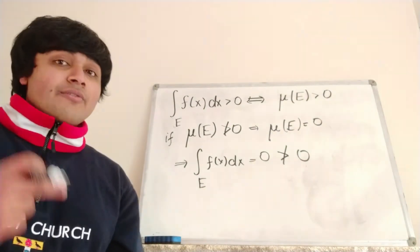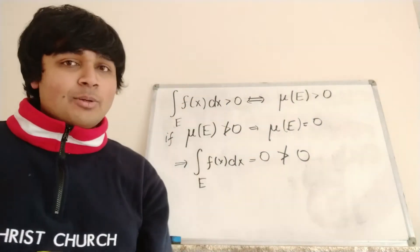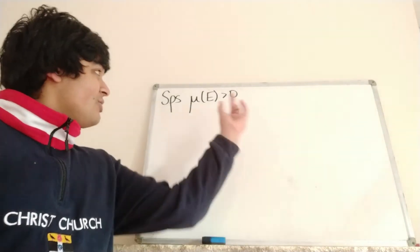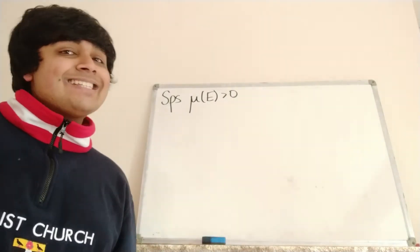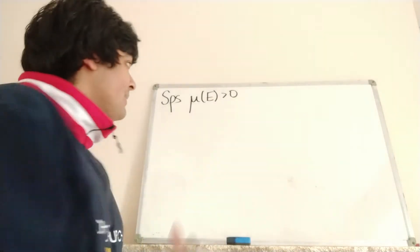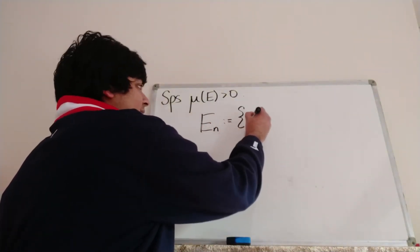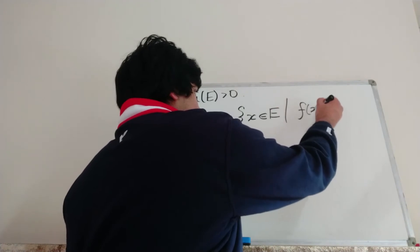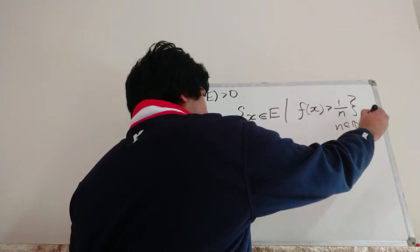Now we want to prove the reverse direction, going from right to left. So if the measure of E is positive, then the integral is positive. To do that we're going to introduce some new sets which I'm going to define as Eₙ. Eₙ is defined to be the set of x in E for which f(x) is bigger than 1/n, and this is for n a positive integer, a natural number.